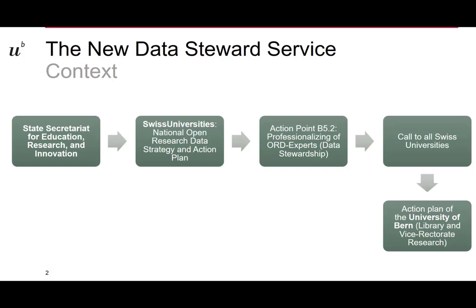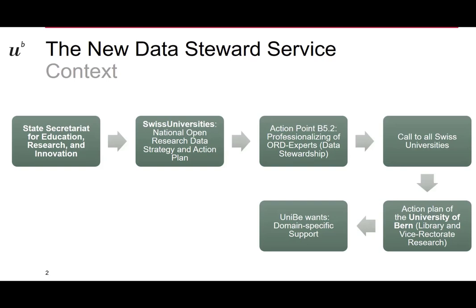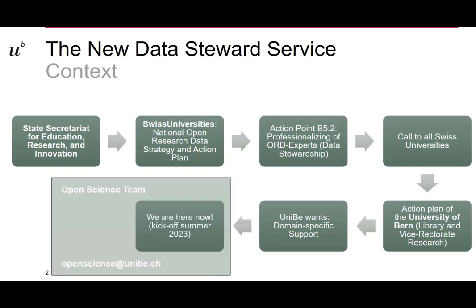The University of Bern created such an action plan, led by the University Library and the Vice Rectorate for Research. They decided that for the University of Bern, they want to have a domain-specific support model. This basically means that instead of one person helping you with all kinds of research, this model is supposed to facilitate more research domain-specific support. That's the idea the University of Bern came up with, and now we're here.